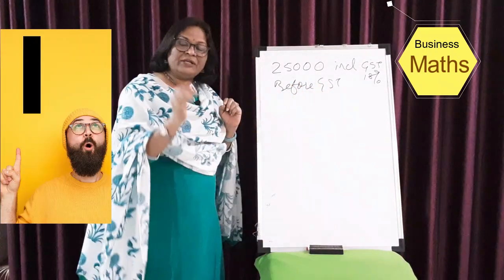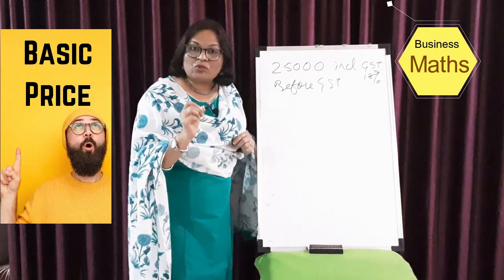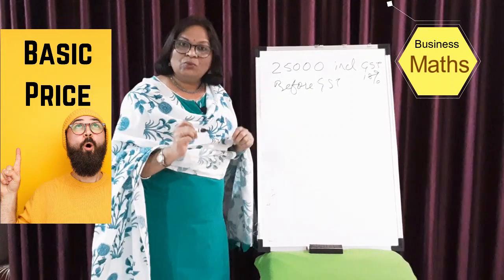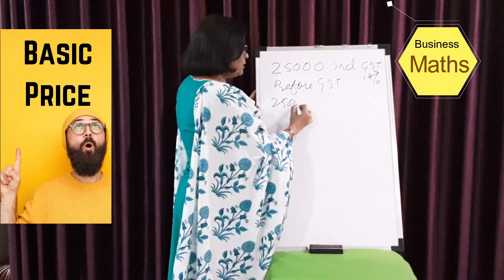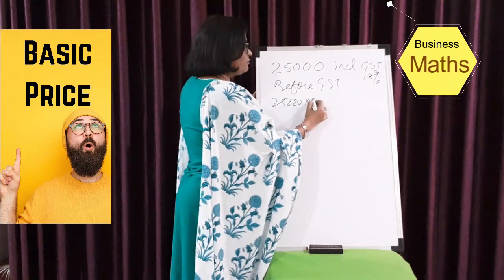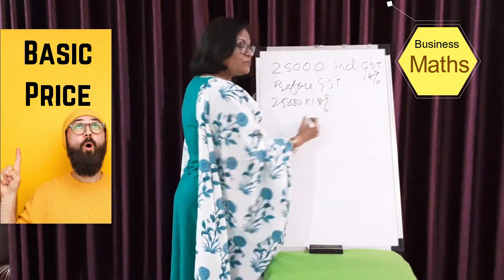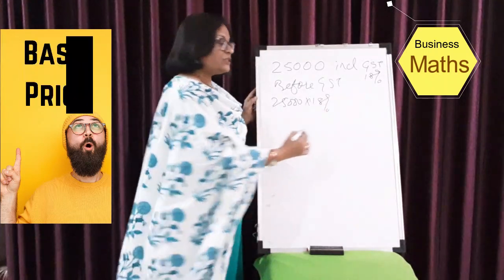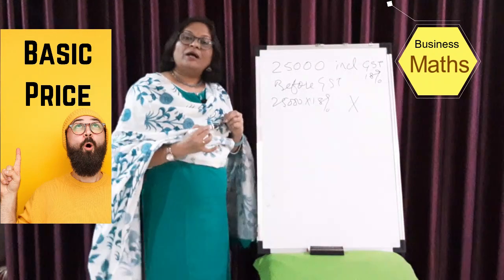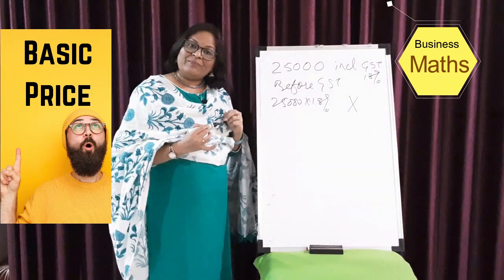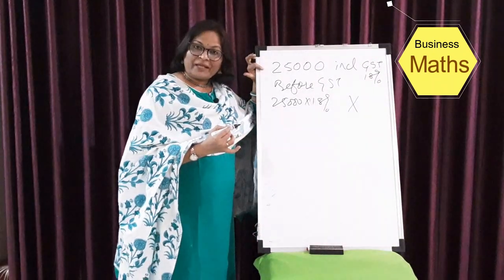The common mistake that most people do is they take 25,000 and straightforward calculate 18% on this — which is a totally wrong method of getting back to the basic value.